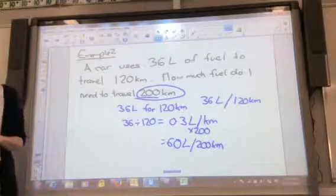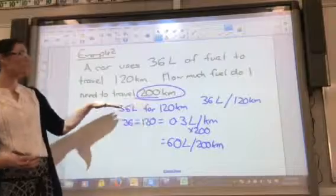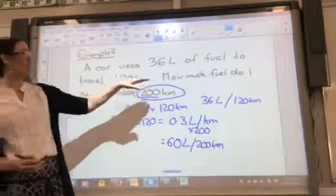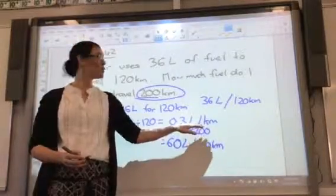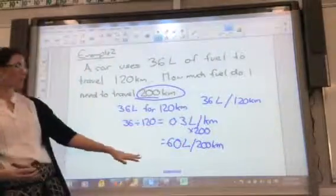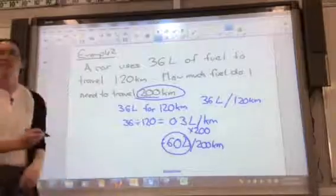So can you see that we've used the unitary method here? We started with a statement of what we had. We worked out what one would be, and then we used that to solve the problem to get our answer to the question, which was 60 litres.